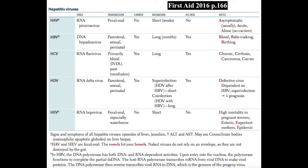Both HBV and HCV predispose a patient to chronic active hepatitis, which can lead to liver cirrhosis and hepatocellular carcinoma. For hepatitis A and E, remember the fecal-oral route — the vowels hit your bowels. Because naked viruses don't rely on an envelope, they are not destroyed in the gut.